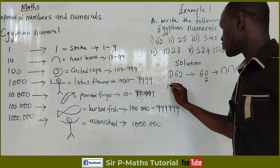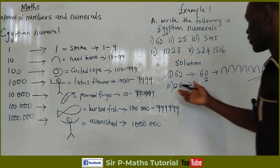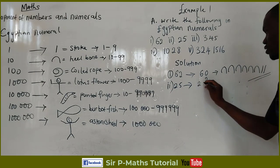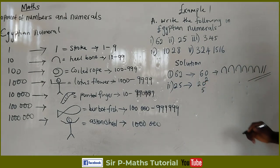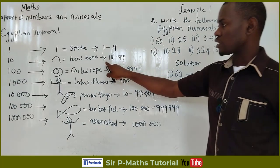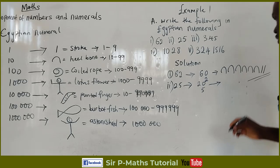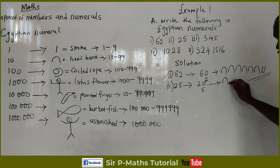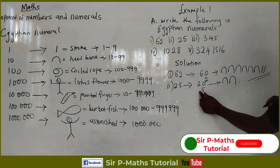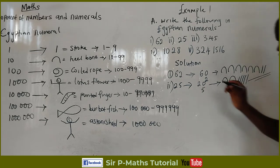The second example is 25. If I split 25 into its parts, I get 20 and 5. For 20, since it falls between 10 and 99, I'll draw two heel bones. For 5, I'll draw five strokes. So what I have here is 25 in Egyptian numerals.